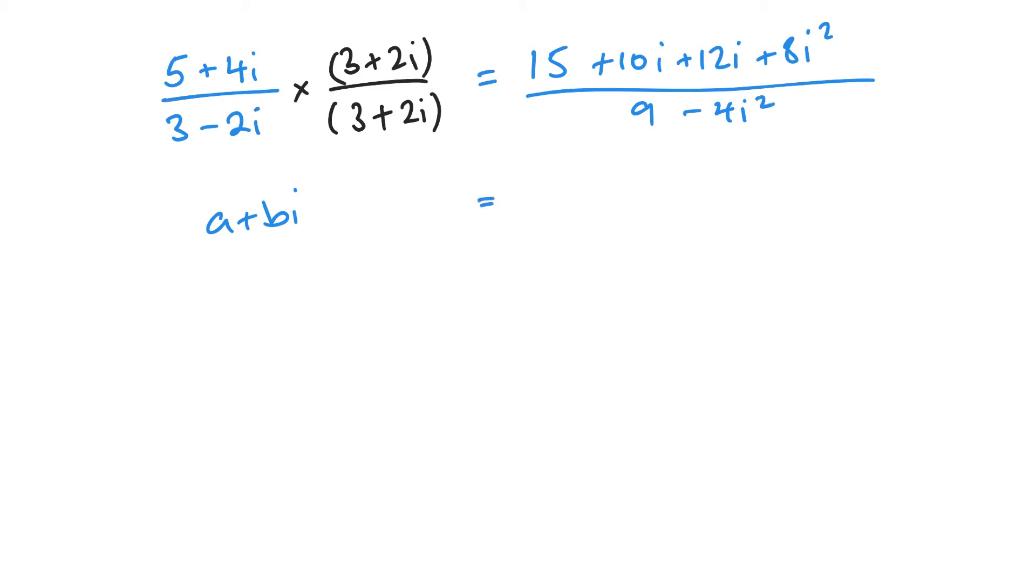So on the top, my 8i squared becomes negative 8. So I've got 15 minus 8 is 7, and I've got 22i. And my minus 4i squared will become plus 4. So I get that over 13. And then all I need to do is separate this out to make sure it's in the form of a plus bi.